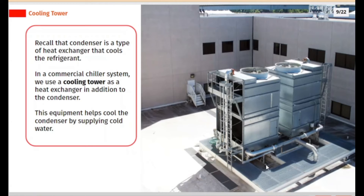Recall that a condenser is a type of heat exchanger that cools the refrigerant. In a commercial chiller system, we use a cooling tower as a heat exchanger in addition to the condenser. We also use pumps to carry water from the condenser to the cooling tower in a commercial system.